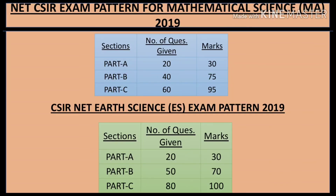For the Mathematical Sciences exam pattern, there are 3 parts with 20, 40, and 60 questions respectively. Part A carries 30 marks. Part B carries 75 marks and Part C carries 95 marks.